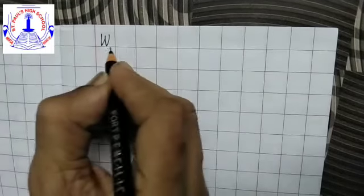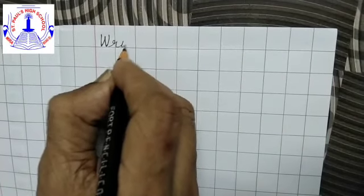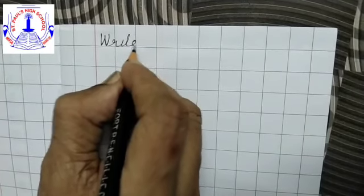Write W. Then write R, cursive R, small cursive R, I T E. Write.